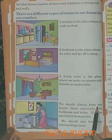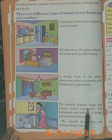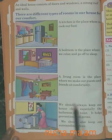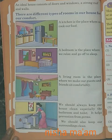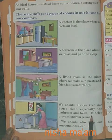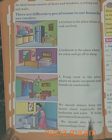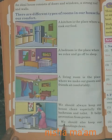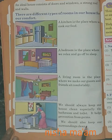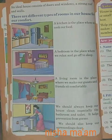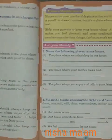We should always keep our house clean, especially the bathroom and toilet. हमारा घर का toilet और bathroom हमें हमेशा clean रखना चाहिए। It helps prevention from germs — क्योंकि हमें germs से रक्षा करनी है। We should also keep our surroundings clean — हमें घर के आसपास की चीज़ें भी clean रखनी चाहिए।